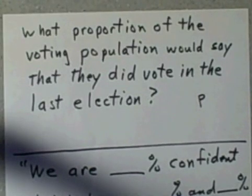I'd like to do another example of finding a confidence interval for a population proportion. Here's the question: what proportion of the voting population would say that they did vote in the last election?